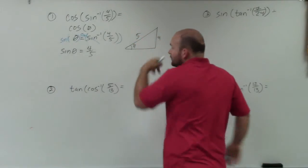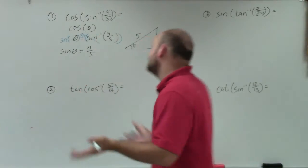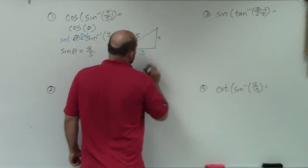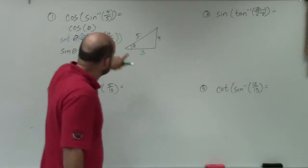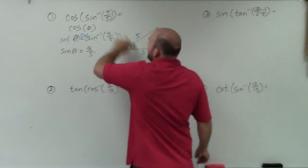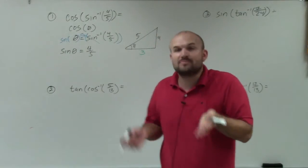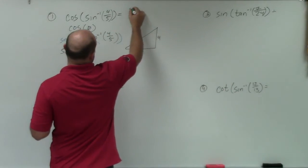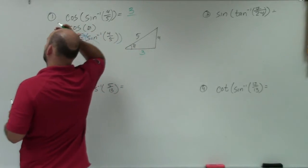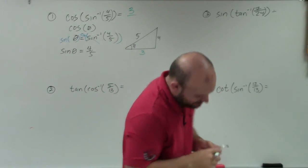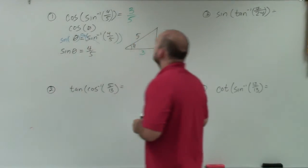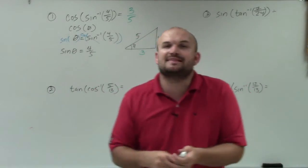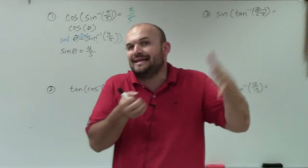Sine of theta equals 4 over 5. By using the Pythagorean triple — or the Pythagorean theorem if needed — we can determine that the missing side length is 3. Now, what are we really asking of that theta? We're asking: what is the cosine? Cosine of theta is adjacent over hypotenuse. So my final answer is 3 over 5. It all really depends on not evaluating for theta — we just need to find the triangle created by that theta.